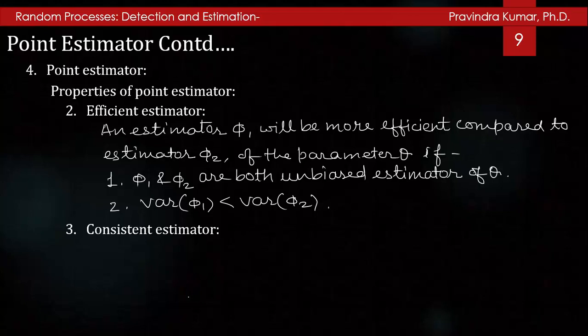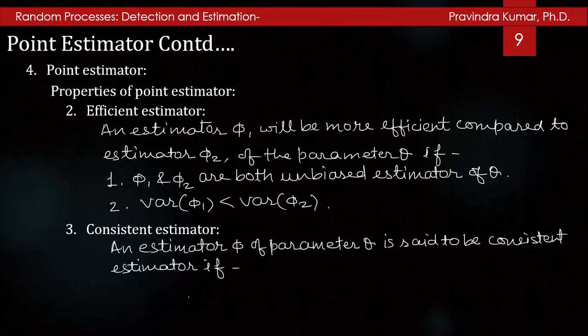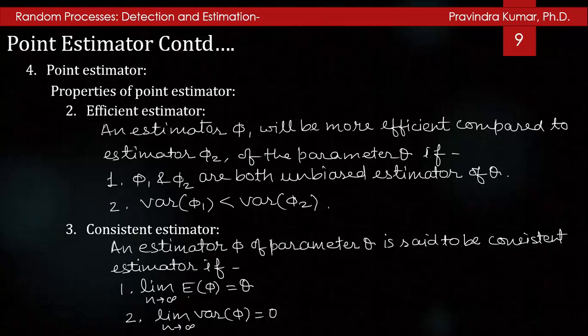The third property is the consistent estimator. An estimator φ of parameter θ is said to be consistent if: (1) lim(n→∞) E[φ] = θ, and (2) lim(n→∞) Var(φ) = 0, where n is the size of the random samples. When both conditions are satisfied, the estimator is consistent.